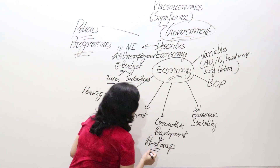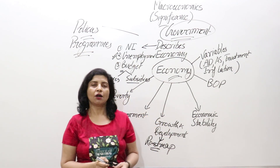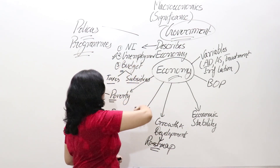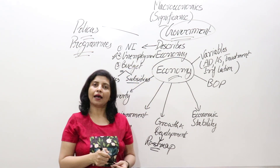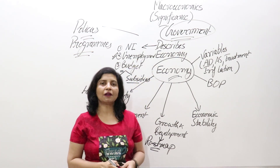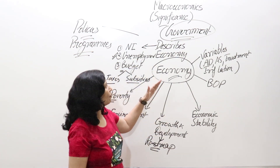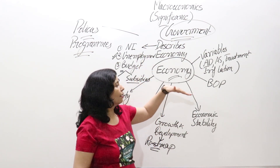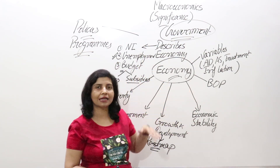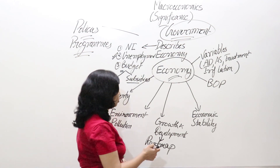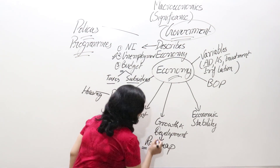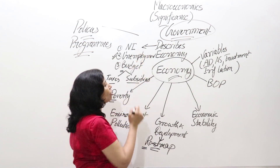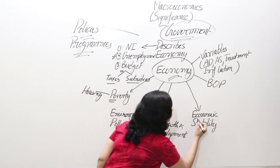When there is growth of a nation, all sectors of the economy develop, people become richer, and the economy as a whole develops. We then attain a good balance of payments and economic stability. So the government plans for growth and development with the help of macroeconomics.